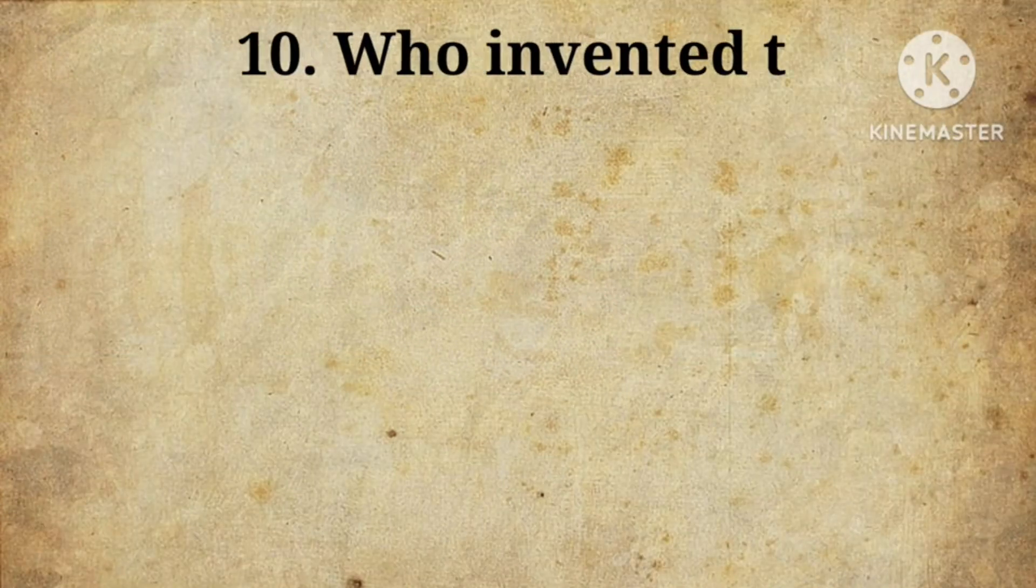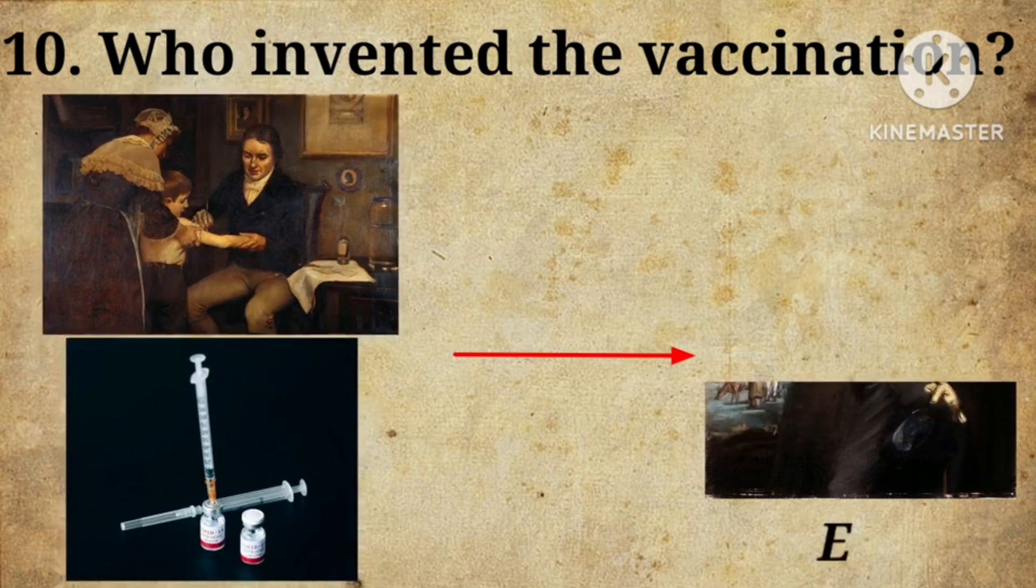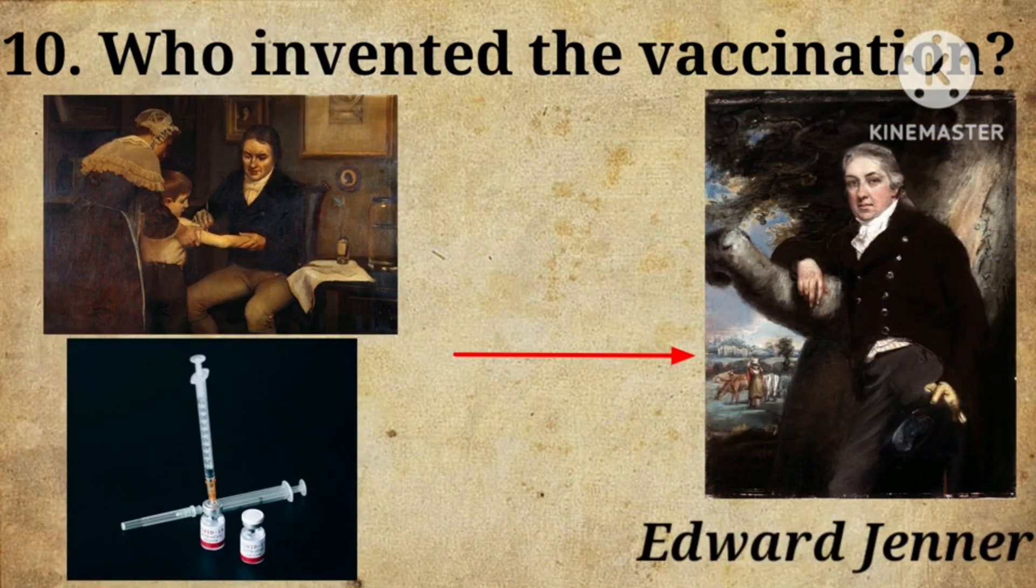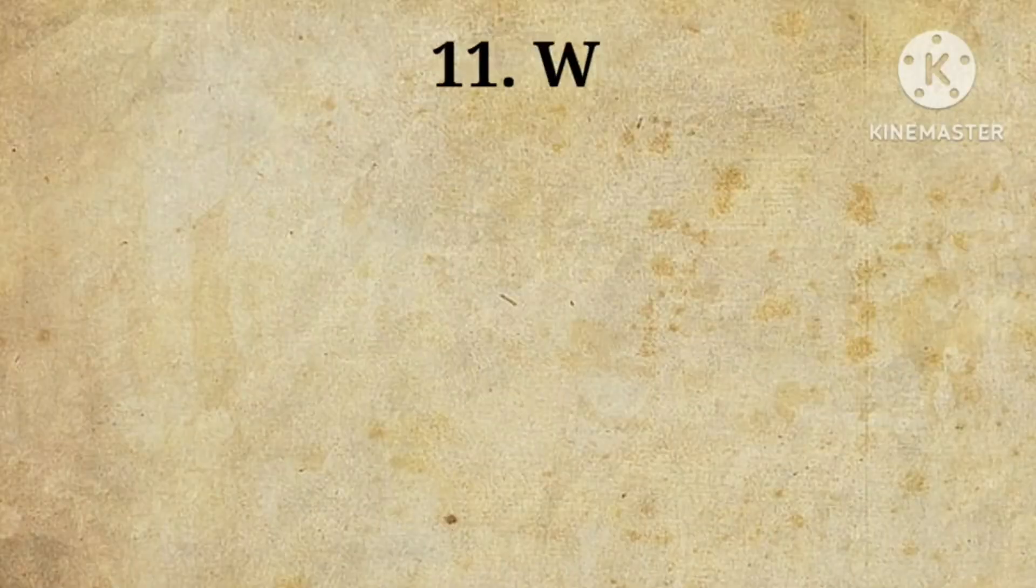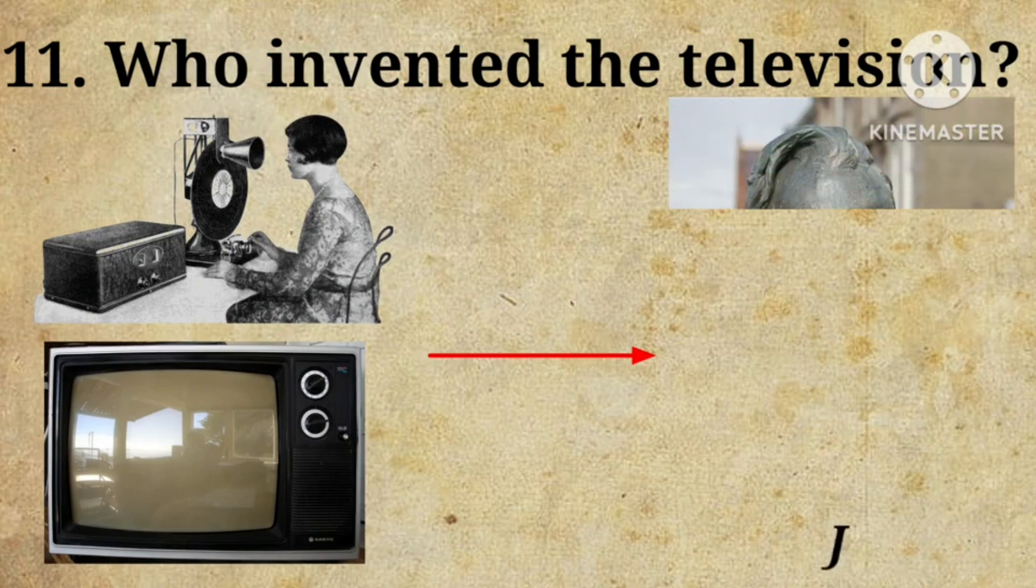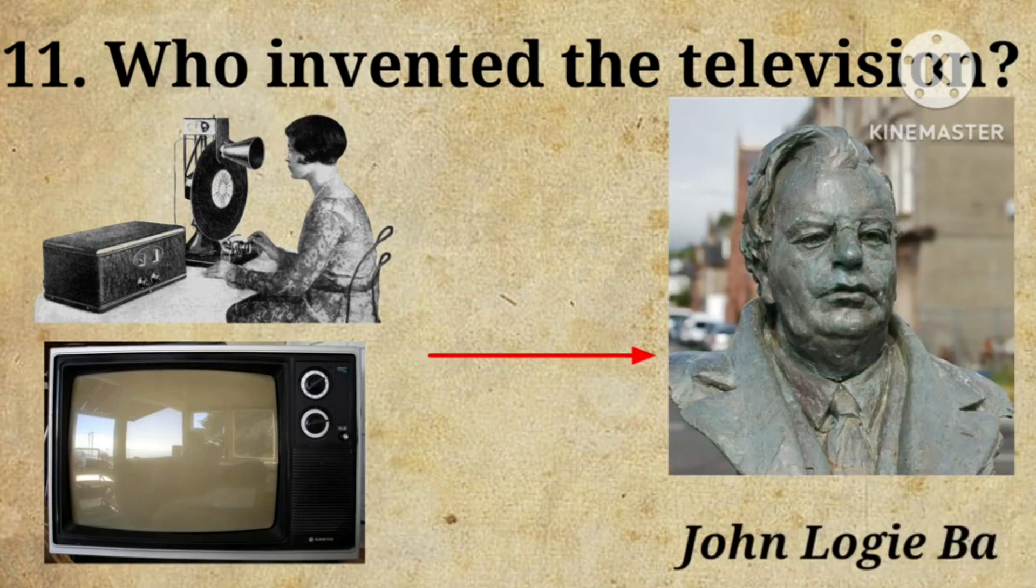Number ten: Who invented the vaccination? Edward Jenner invented the vaccination. Number eleven: Who invented the television? John Logie Baird invented the television.